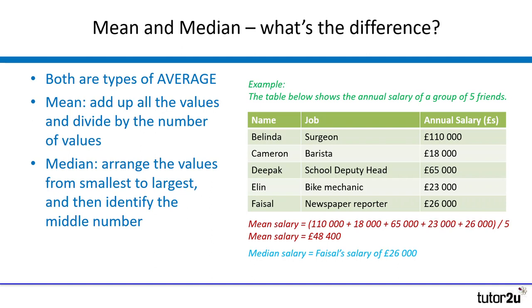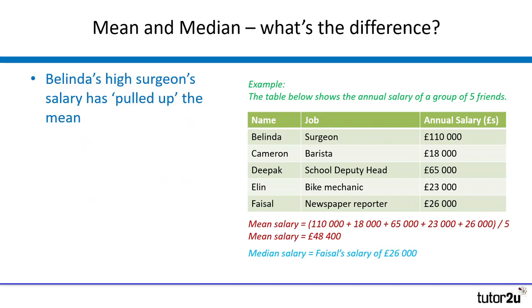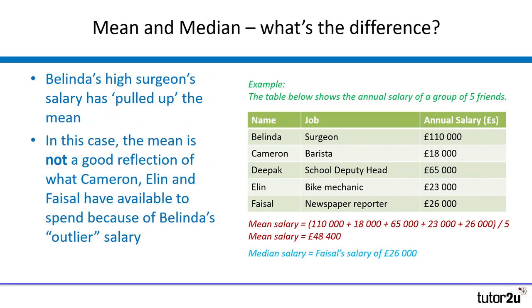In this case, Faisal's salary is the number in the middle, and that is £26,000. As you can see, that is actually slightly more reflective of the living standards of three of our friends on the table. What happened when we looked at the mean is that Belinda's very high surgeon salary effectively pulled up the mean — it's a strong outlier, and that one number has had a really big impact on our final average salary.